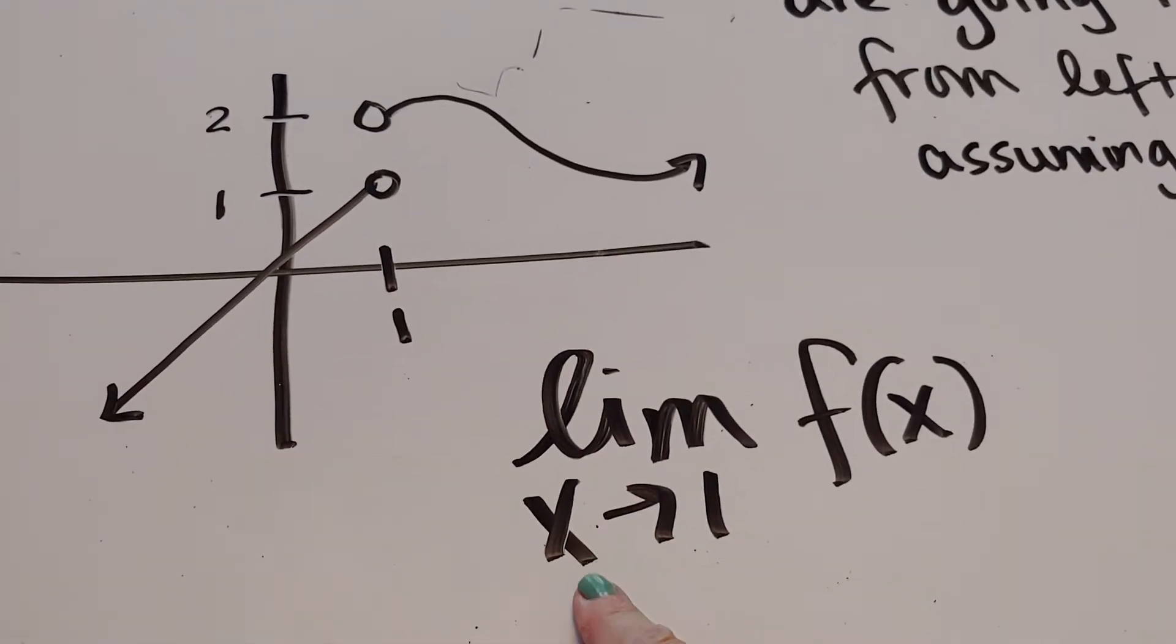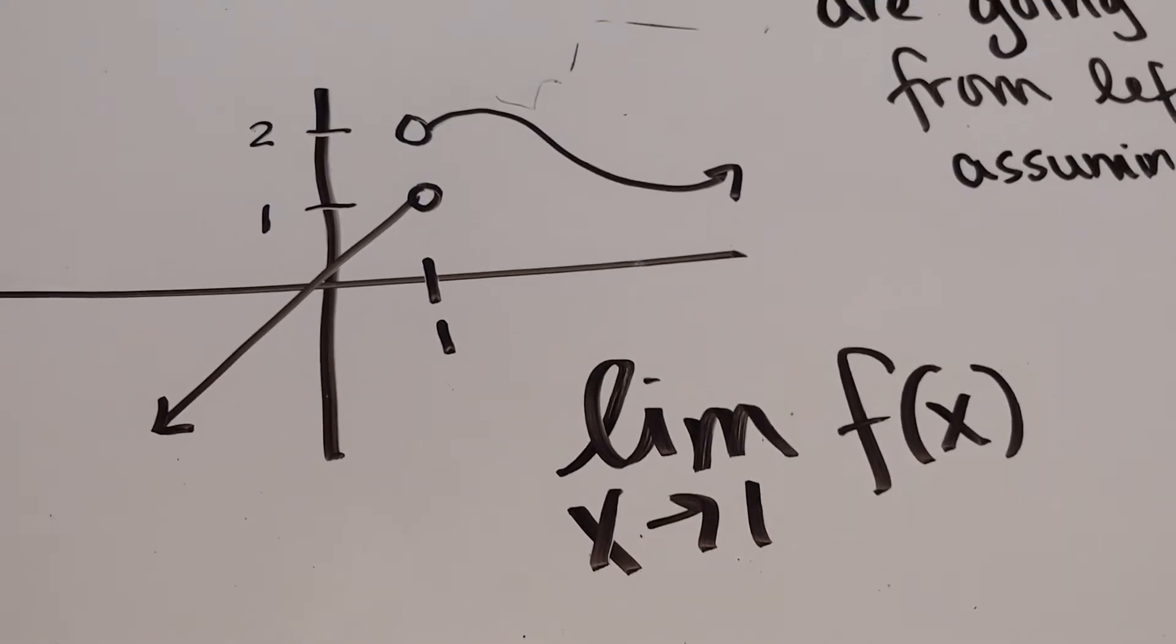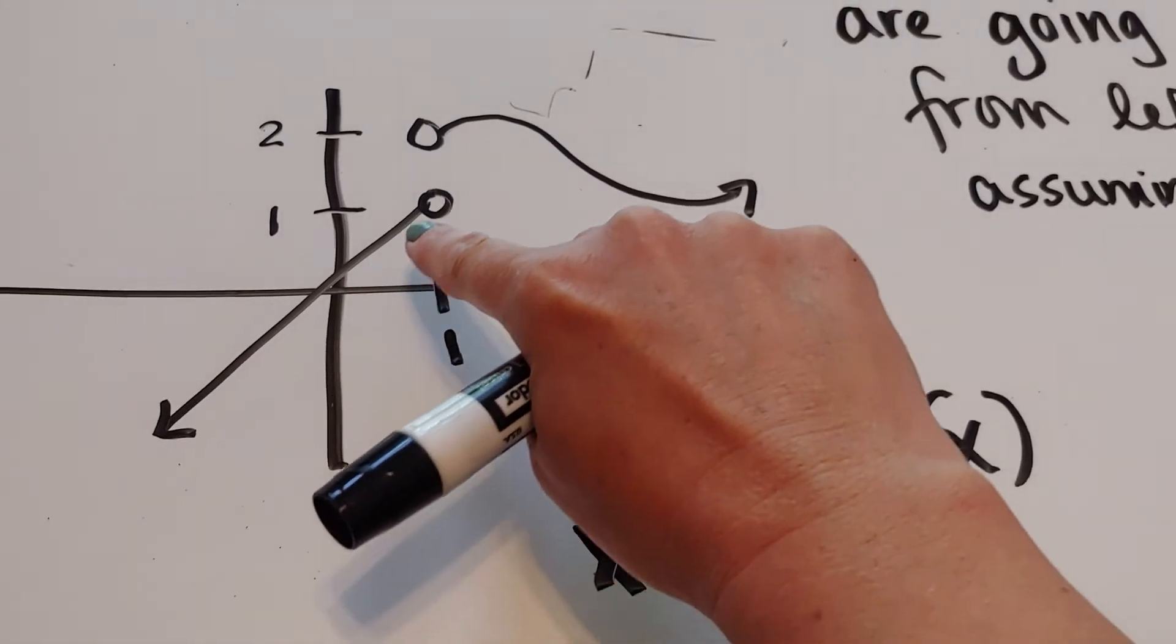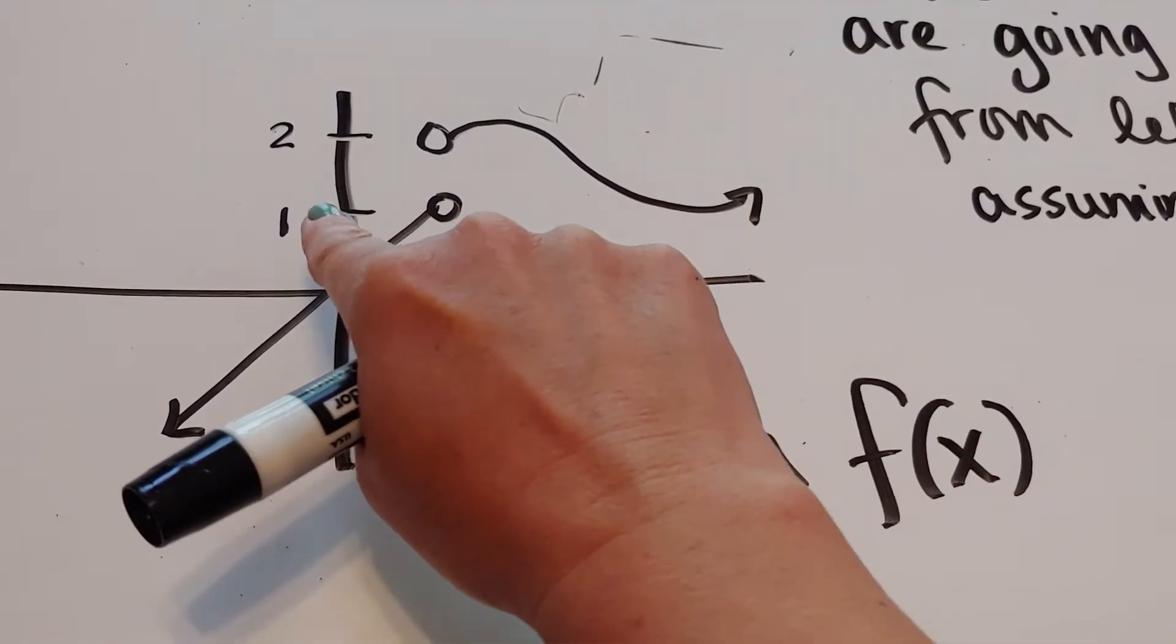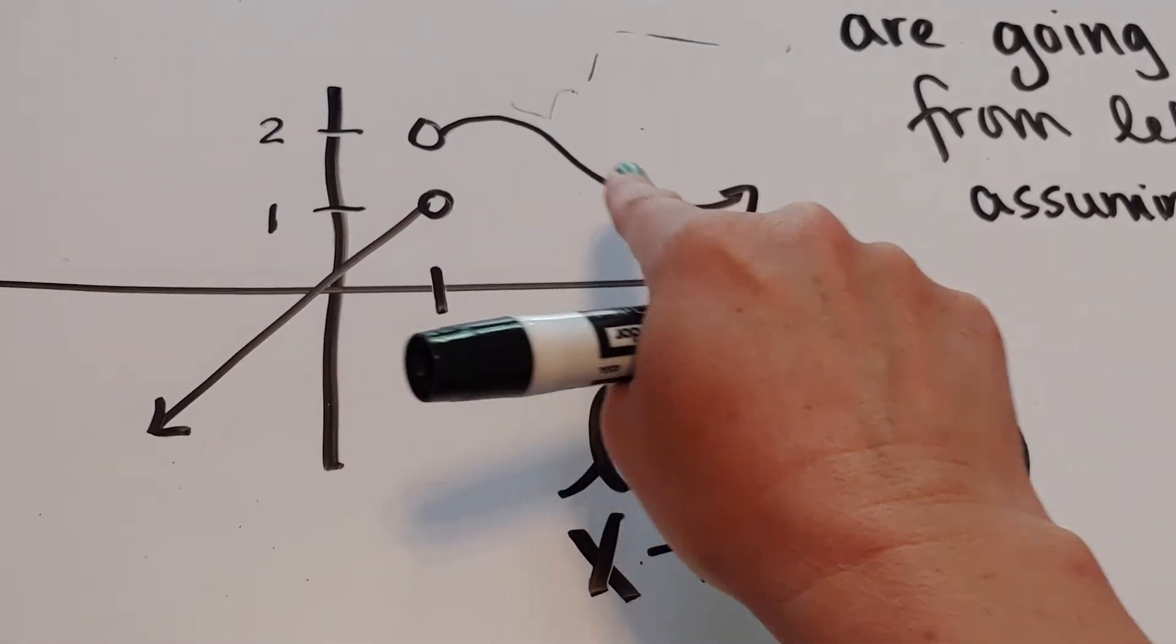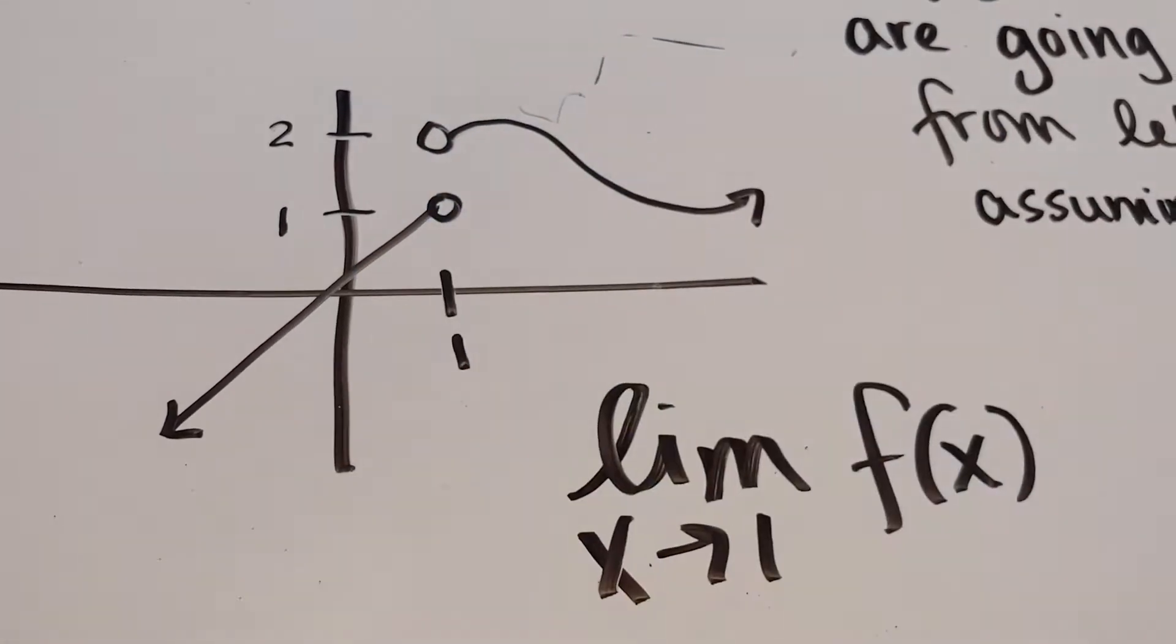So what happens when I'm walking on this graph is as I'm approaching it from the left, I'm going to a y value of 1. And as I'm approaching it from the right, I'm going to a y value of 2.